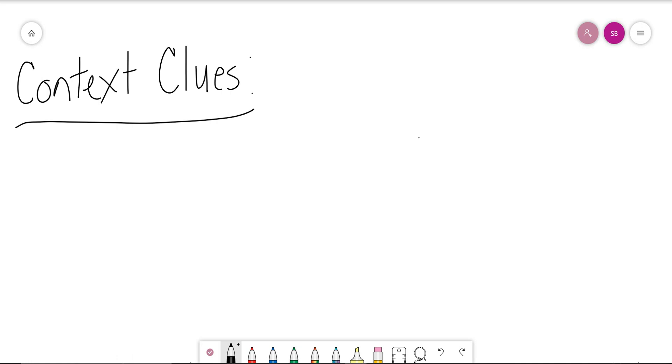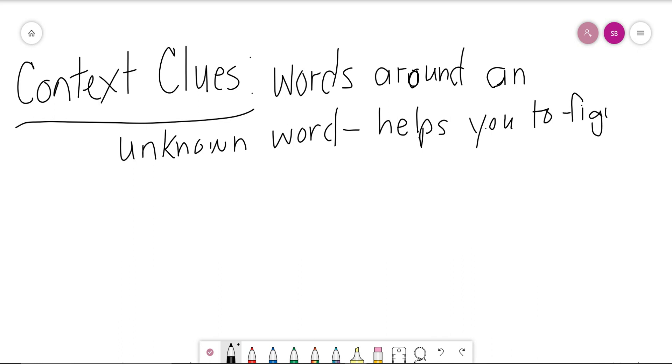Remember from the beginning of my first lesson, I said the more you write it, the more it gets into your brain, and we want this in your brain. So, context clues are words around an unknown word. This helps you to figure out the meaning of that word.